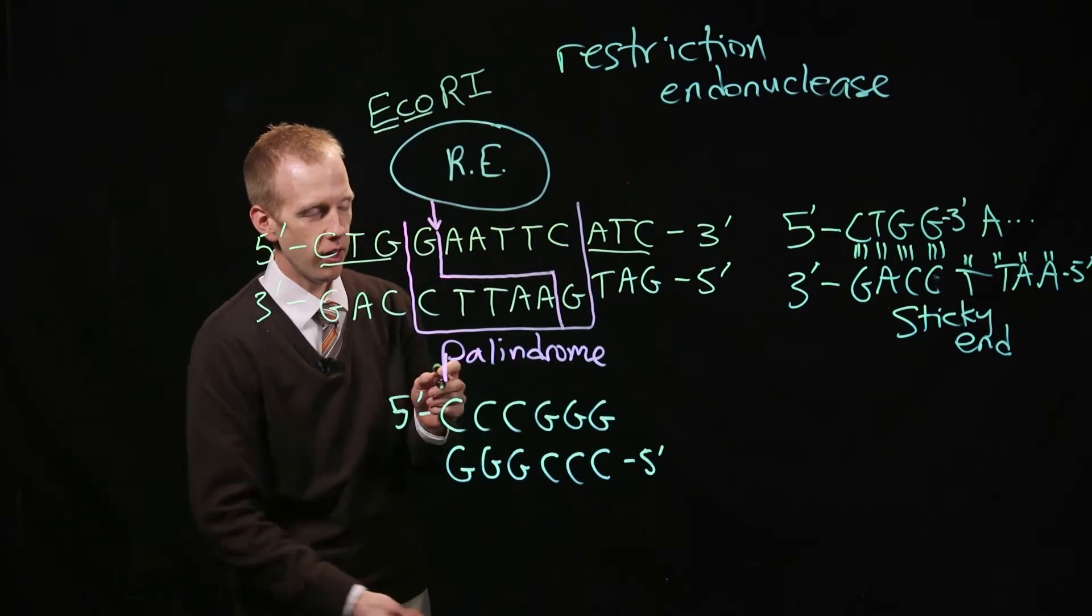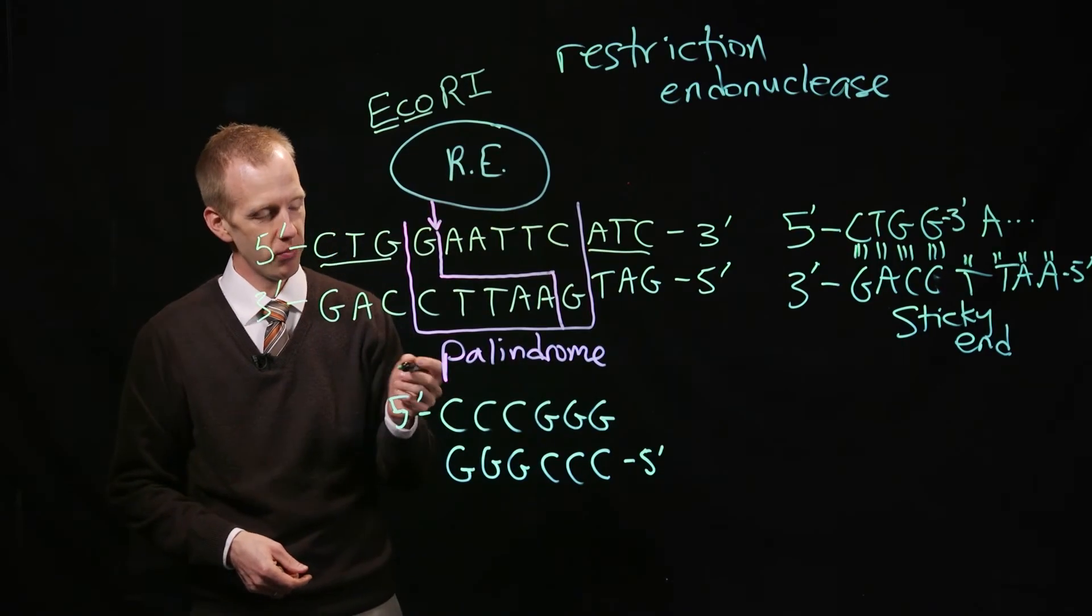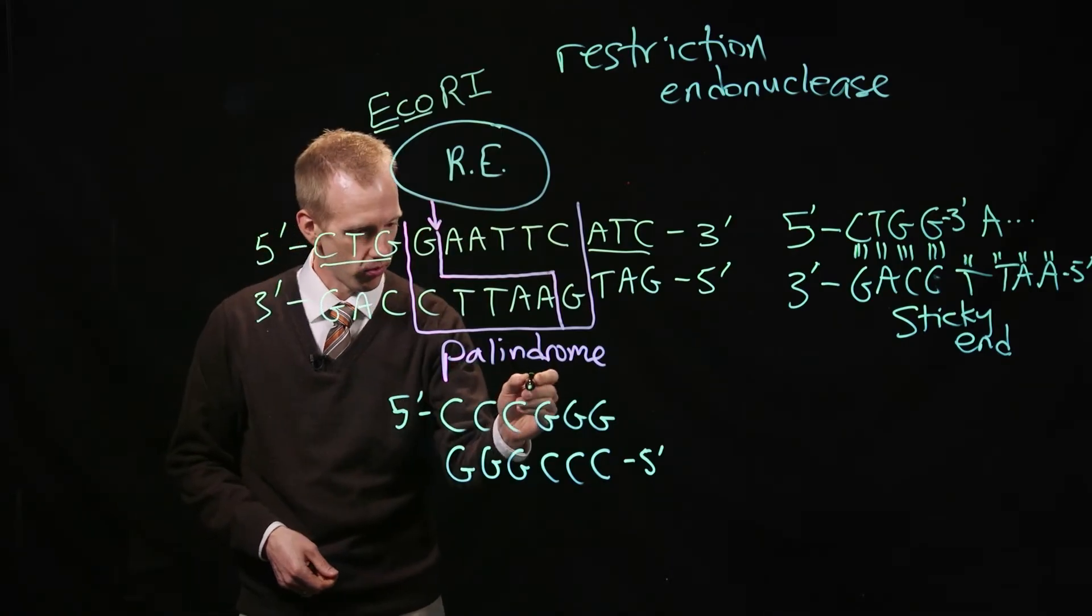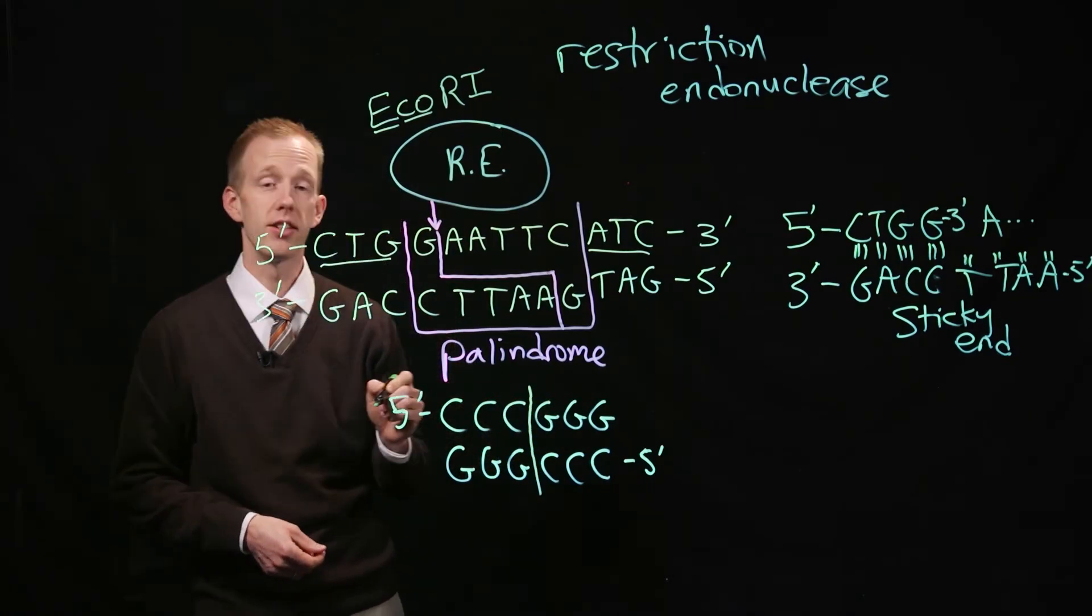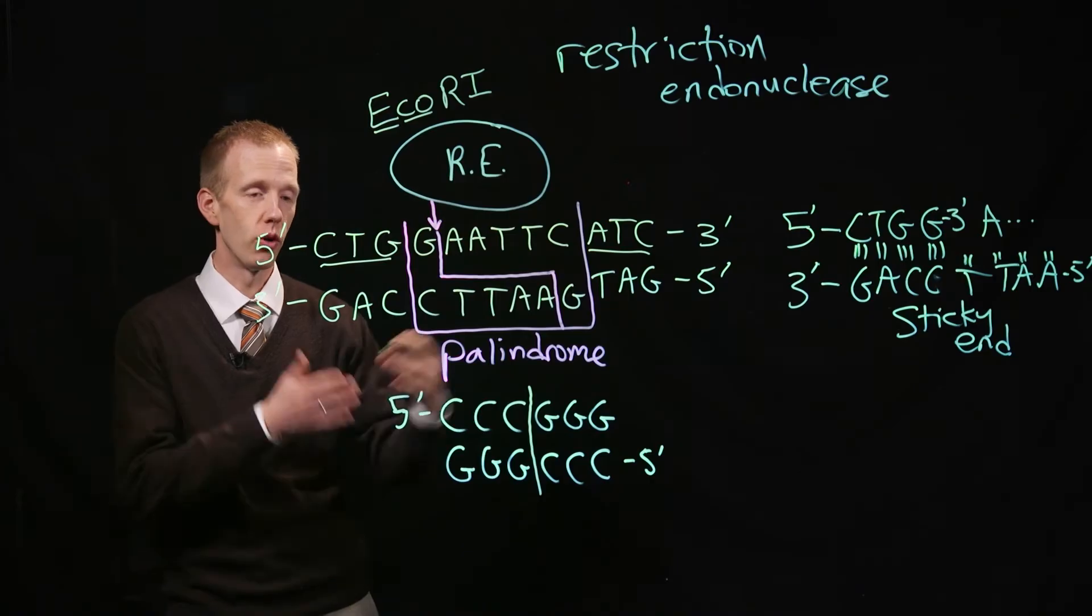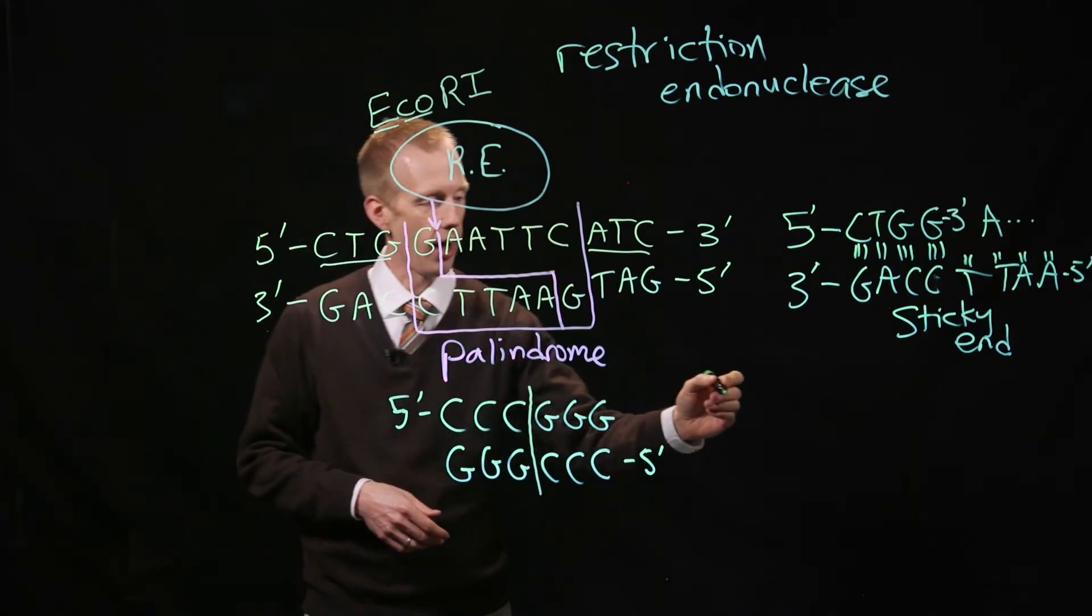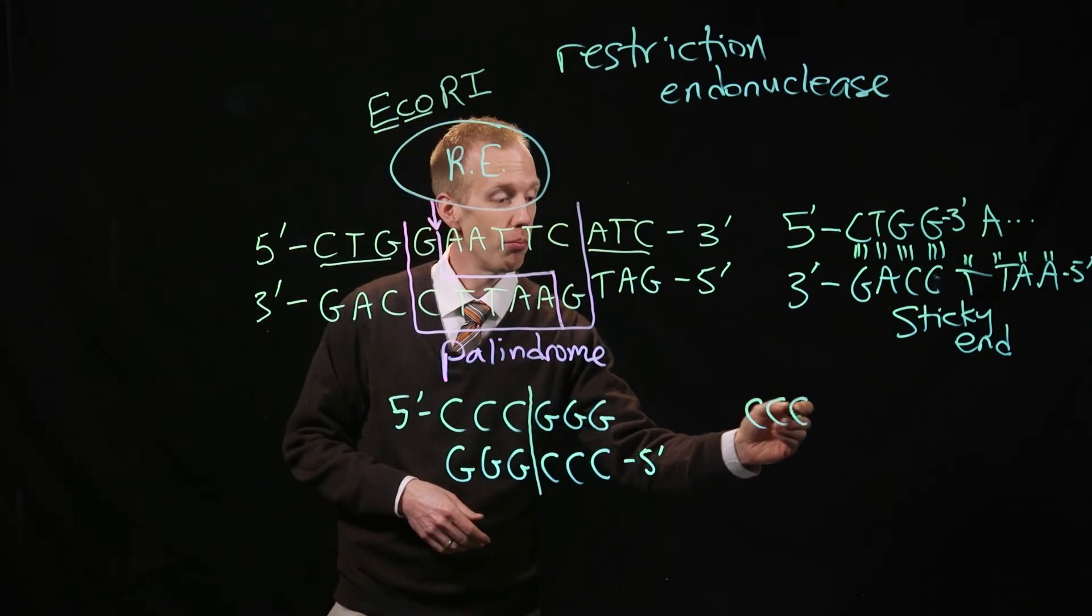There's an enzyme here, a different restriction enzyme, that will cut right in between the C's and the G's. When those molecules separate, you have two blunt ends.